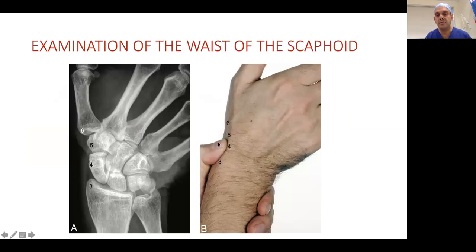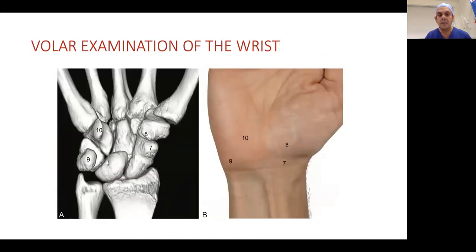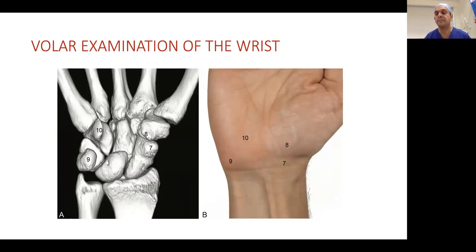Coming to the waist, the best way to palpate is with the hand in ulnar deviation. Number three is the radial styloid, four is the waist, five is the trapezium. Put your thumb in the anatomical snuff box — that's where you can palpate the waist of the scaphoid. On the volar aspect, number seven is the tubercle of the scaphoid. Further down is the trapezium tubercle. The tubercle is also relevant as the incision site for your volar approach.